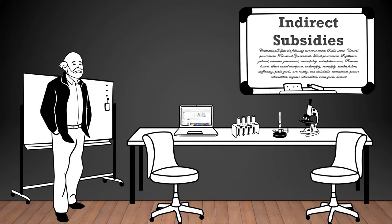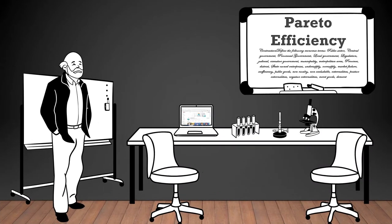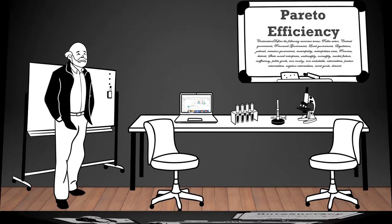Indirect subsidies: financial assistance provided by the government through measures that indirectly benefit certain industries or sectors, such as tax breaks or reduced regulations. Pareto efficiency: a situation in which it is not possible to make one individual better off without making another individual worse off. In a Pareto efficient allocation, resources are allocated in the most efficient way, and no one can be made better off without making someone else worse off.